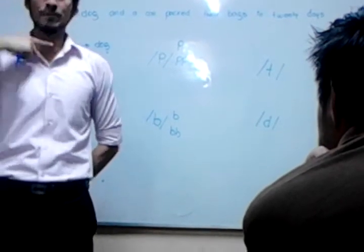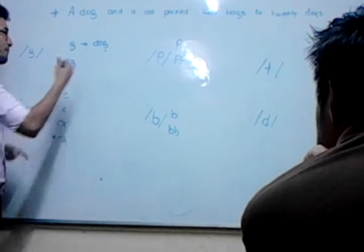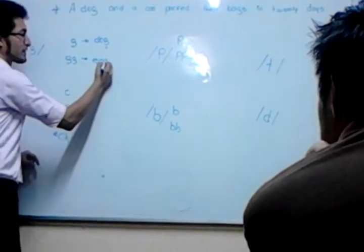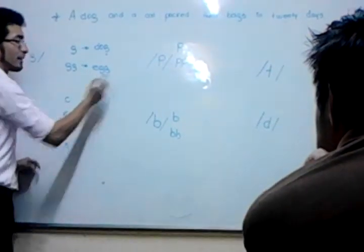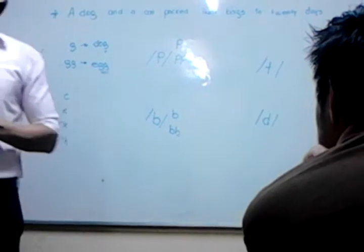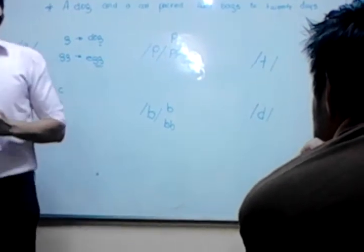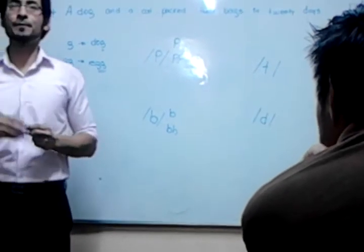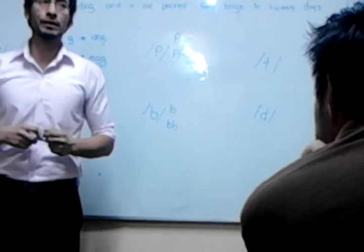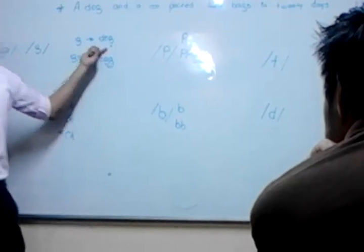What is double G? Dog. Example. We can say 'egg,' right? Egg. This one is at the end.